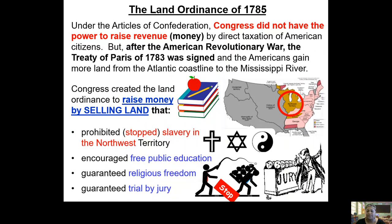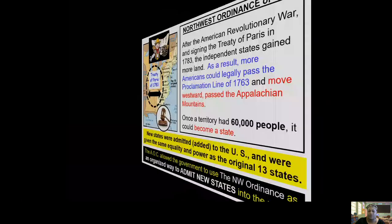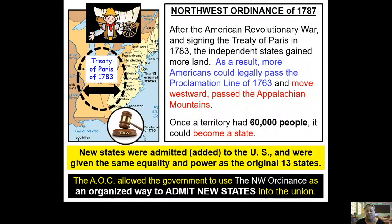That document was created when the government was operating under the AOC, the Articles of Confederation. Another good thing about the Articles of Confederation is that it allowed another document to be created called the Northwest Ordinance of 1787. This document is important because it provides a very organized and methodical way for a territory to become a state.